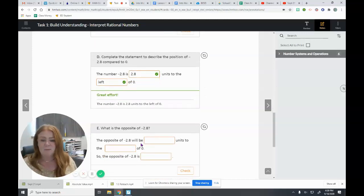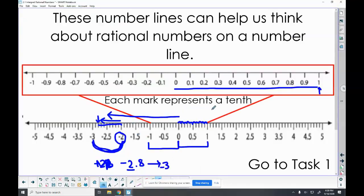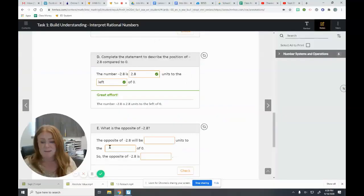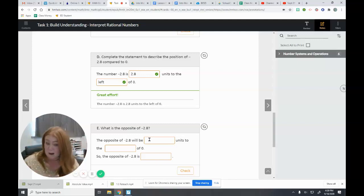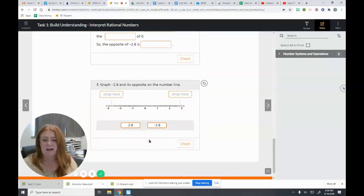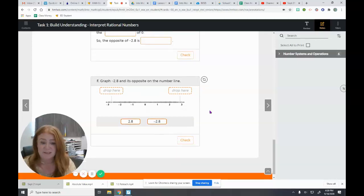The opposite of negative 2.8 is going to be completely on the other side of zero. So 2.8 on the other side of zero makes that 2.8. If I go in the opposite direction from zero, the opposite of negative 2.8 will be 2.8 units to the right of zero. So the opposite of negative 2.8 is positive 2.8. Now we're going to graph each of these. Remember that negatives go to the left and positives go to the right.